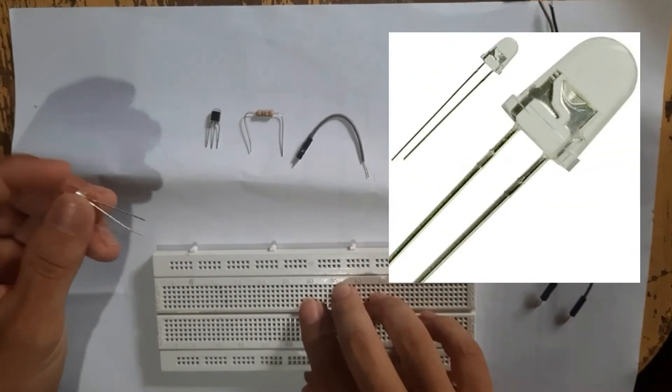LED stands for Light Emitting Diode. LED lighting products produce light up to 90% more efficiently than incandescent light bulbs. How do they work? An electrical current passes through a microchip which illuminates the tiny light sources we call LEDs, and the result is visible light.